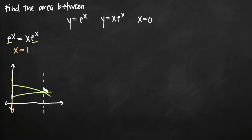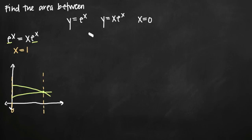Now we need to figure out which of the two curves — y equals e to the x or y equals xe to the x — is the higher curve. The easiest way is to plug in a point between zero and one into both curves and see which one gives a higher value. For example, we can plug in 0.5 to both curves and whichever result is higher tells us which curve is on top.